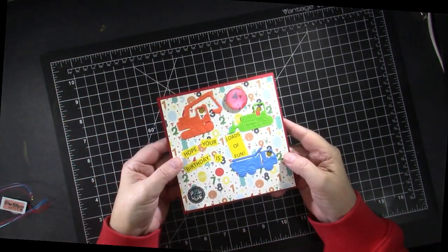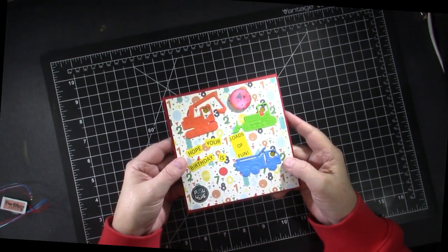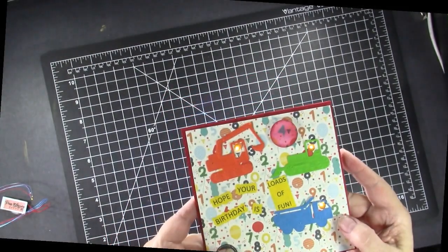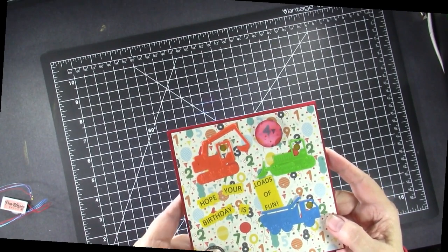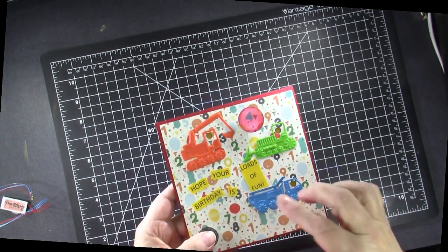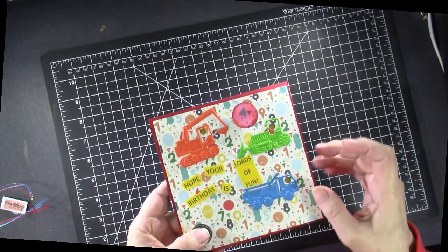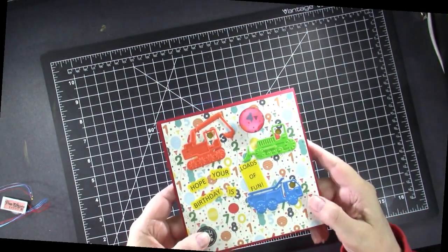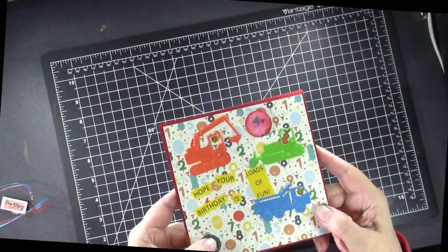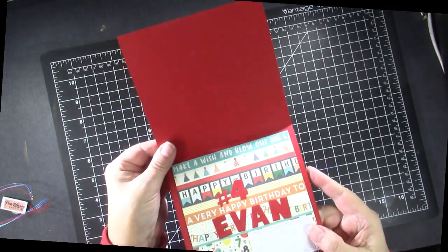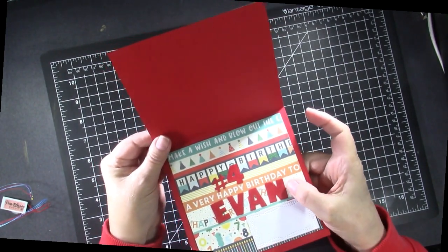This is the special birthday card for my grandson who will soon be four. He loves trucks and I think he's going to love pushing this button and seeing all of the trucks on the front of the card light up. I just made a computer generated sentiment that says 'hope your birthday is loads of fun' and put the loads of fun in the dump truck and of course he's turning four. So he'll be able to push and see the lights on all the trucks light up. And then on the inside I just have a personalized message to him. I'm using Karen Burniston's Alphabet and Numbers dies.